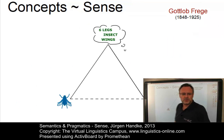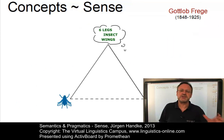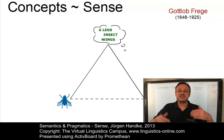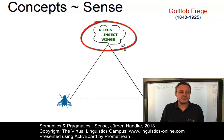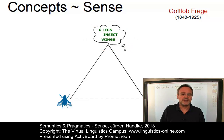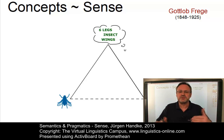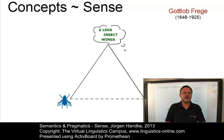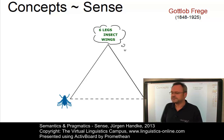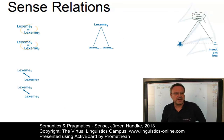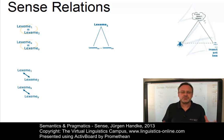The logician Gottlob Frege was the first to distinguish two dimensions of our semantic knowledge of an expression: its sense and its reference. Sense is represented in our minds in terms of concepts; hence, words or lexemes are better conceived of as labels for concepts rather than objects. A number of linguists have equated sense with sense relations by defining the sense of a linguistic expression as the set or network of sense relations that hold between it and other expressions of the same language. These sense relations are central to the way speakers and hearers construct meaning.